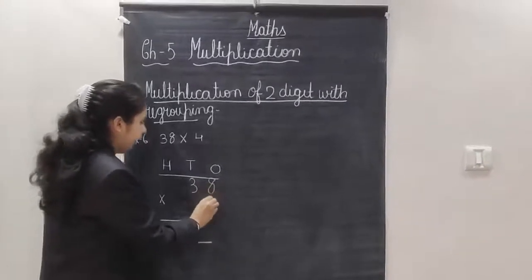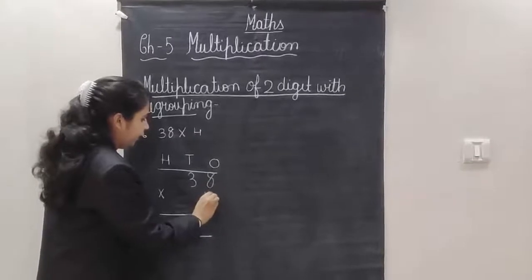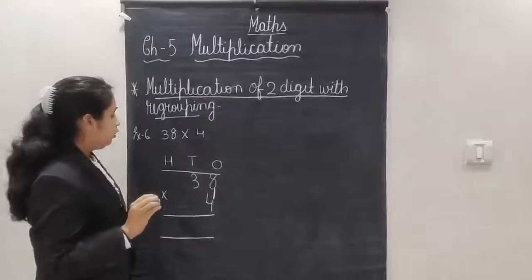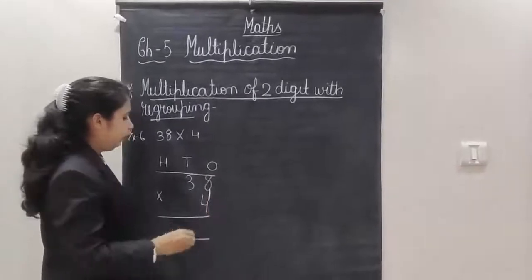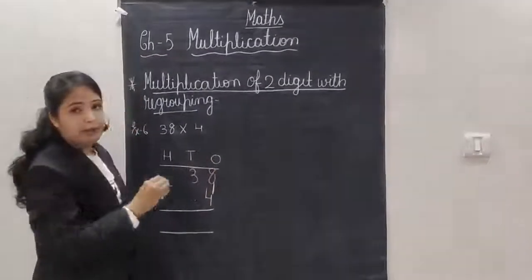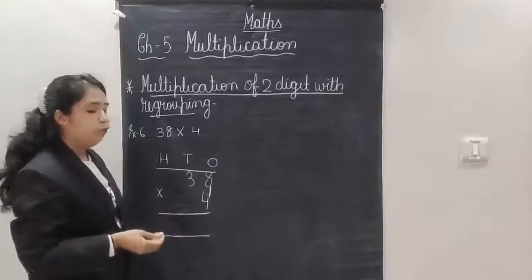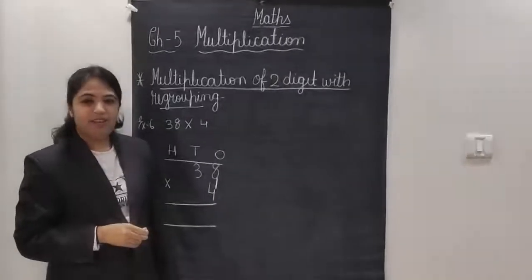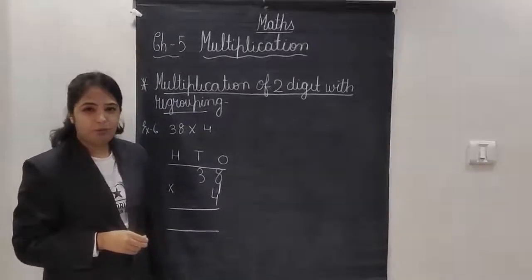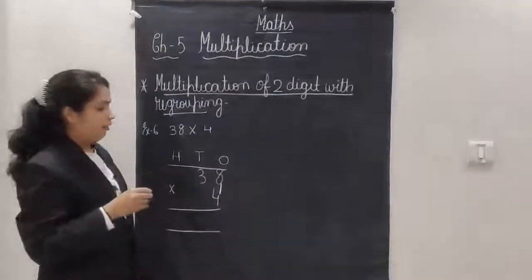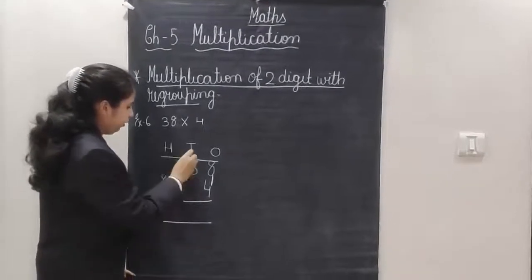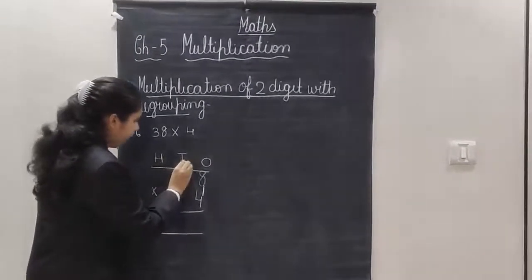4 multiplied by 8. First you have to multiply these two numbers. 4 times 8 or 8 times 4? The answer is 8 ones are 8, 8 twos are 16, 8 threes are 24 and 8 fours are 32.